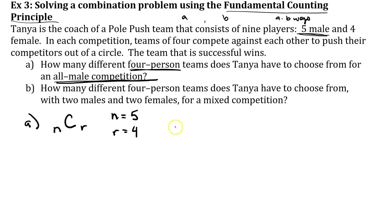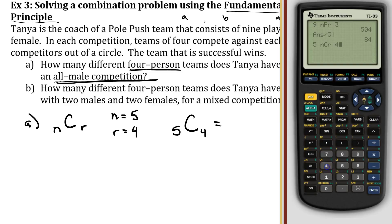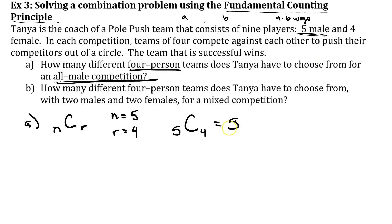When I put into my calculator five choose four — you will always have your calculator available to you, so you're always welcome to use it — five choose four gives us five. So we know we have five different teams to choose from. It's still important to practice the definitions of combinations and permutations with factorials, but for a question like this we can just use our calculator.